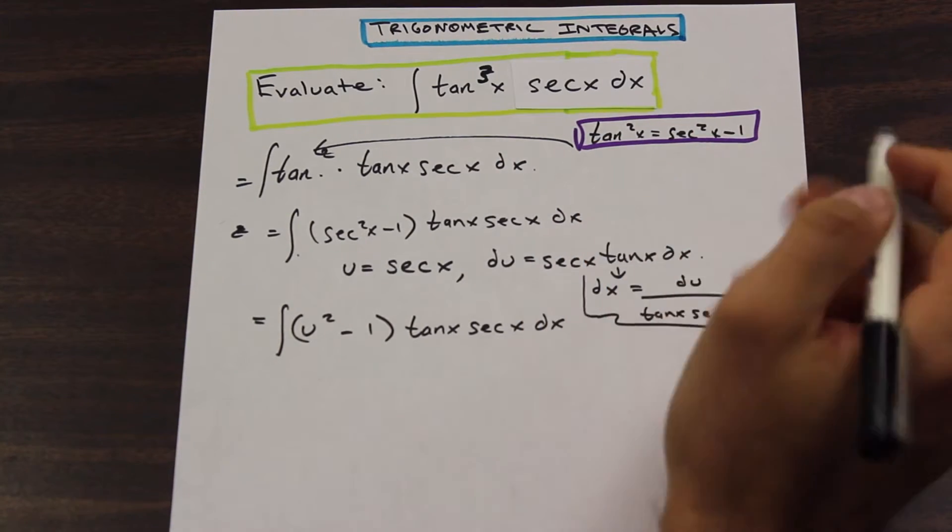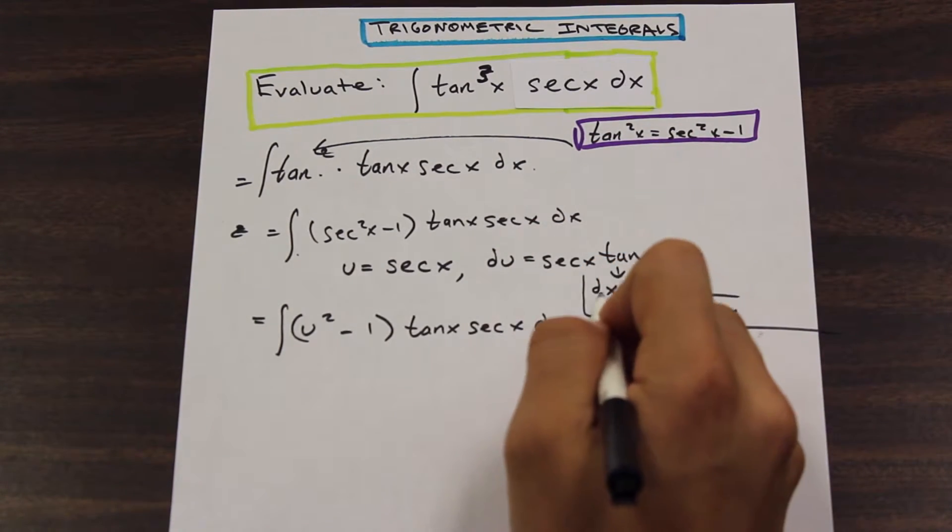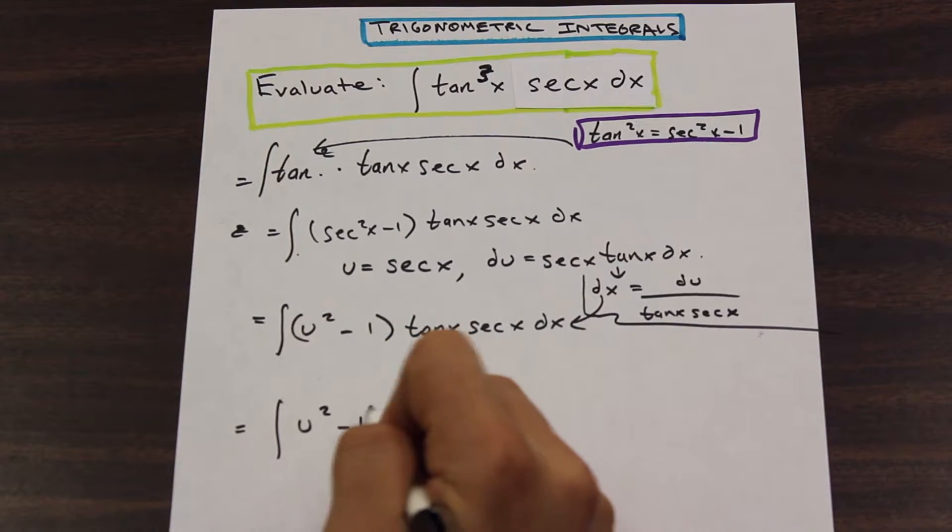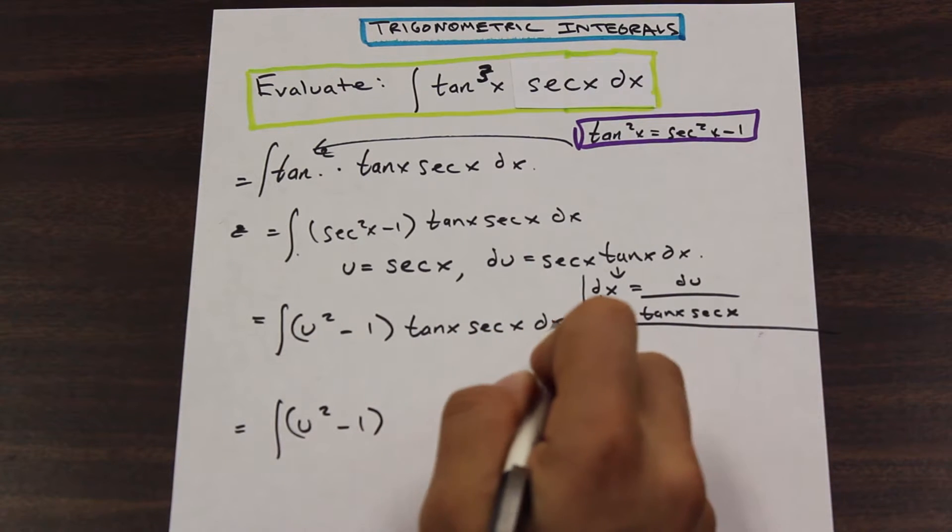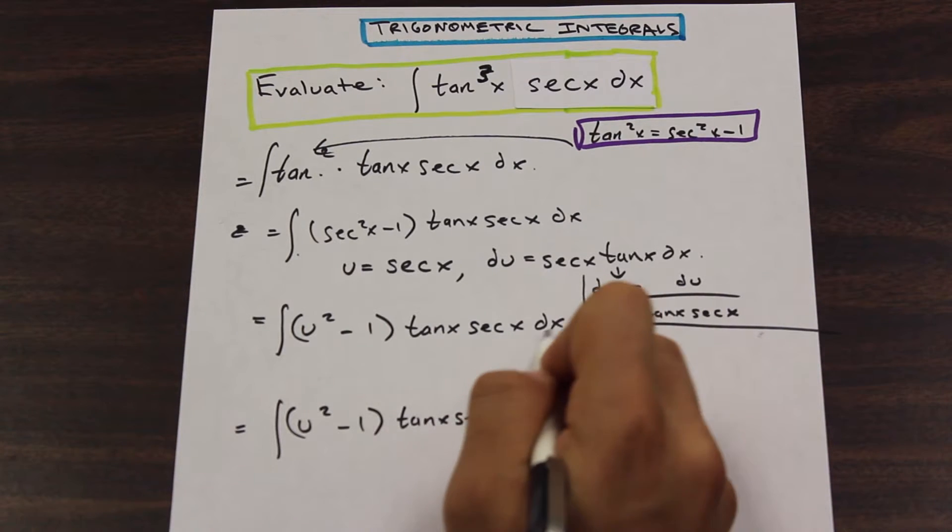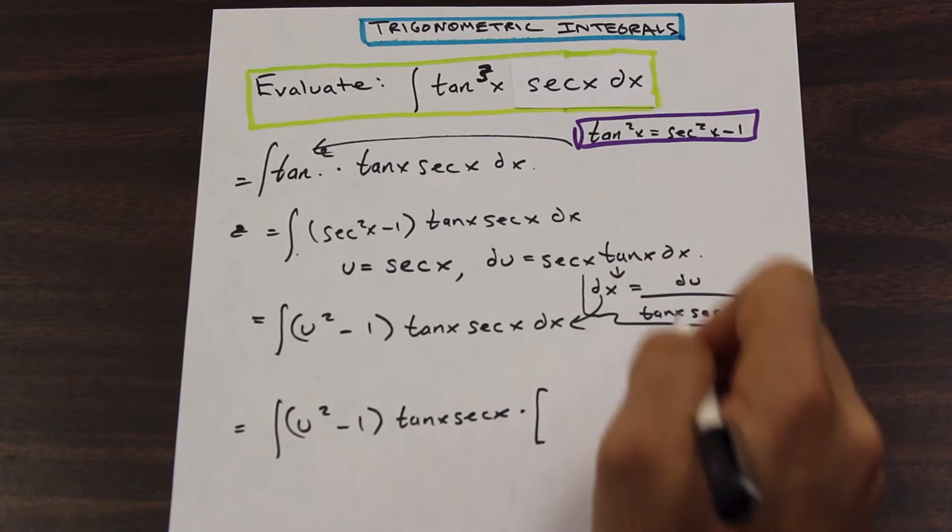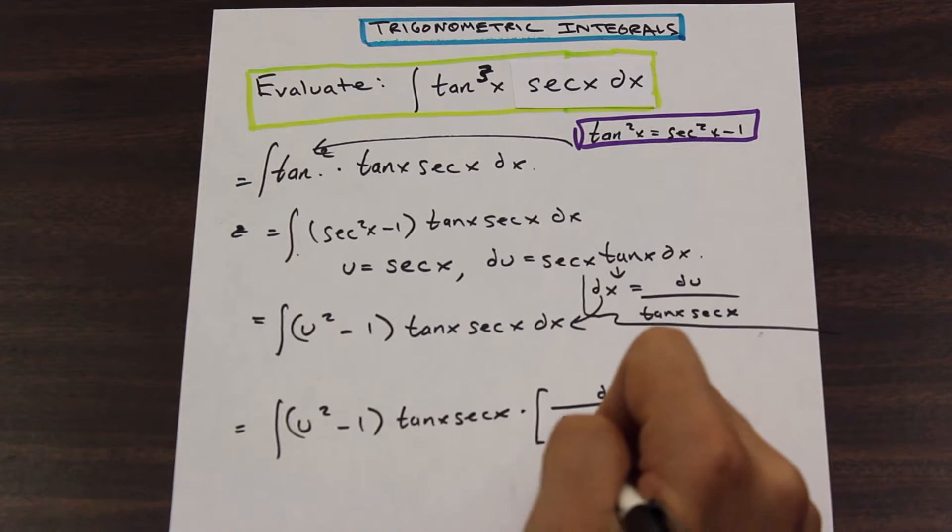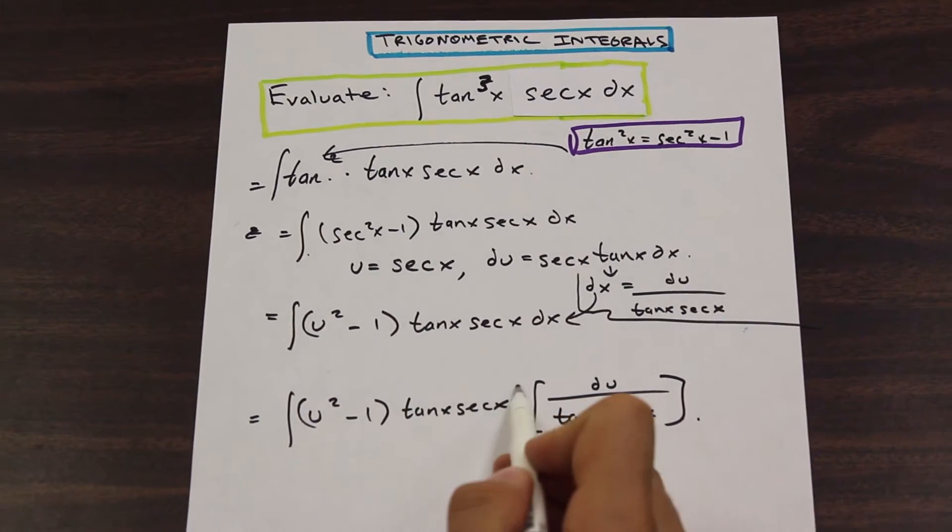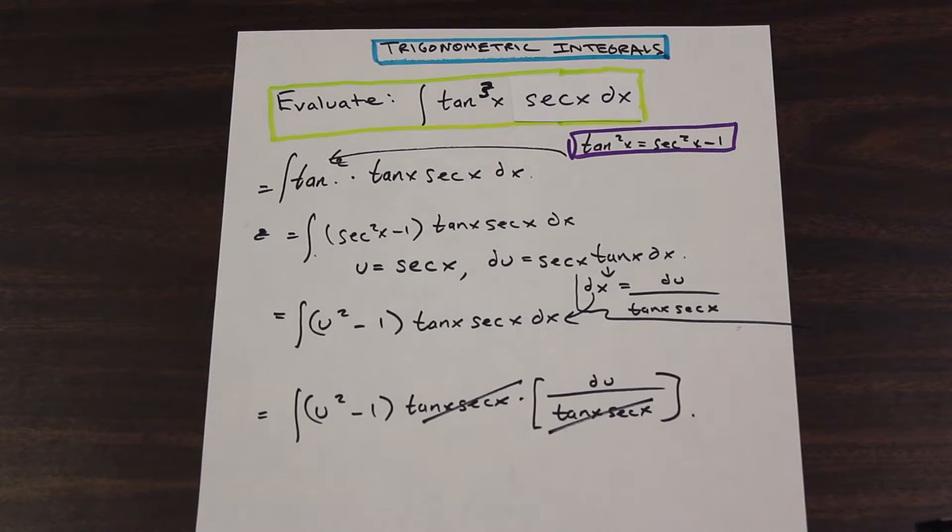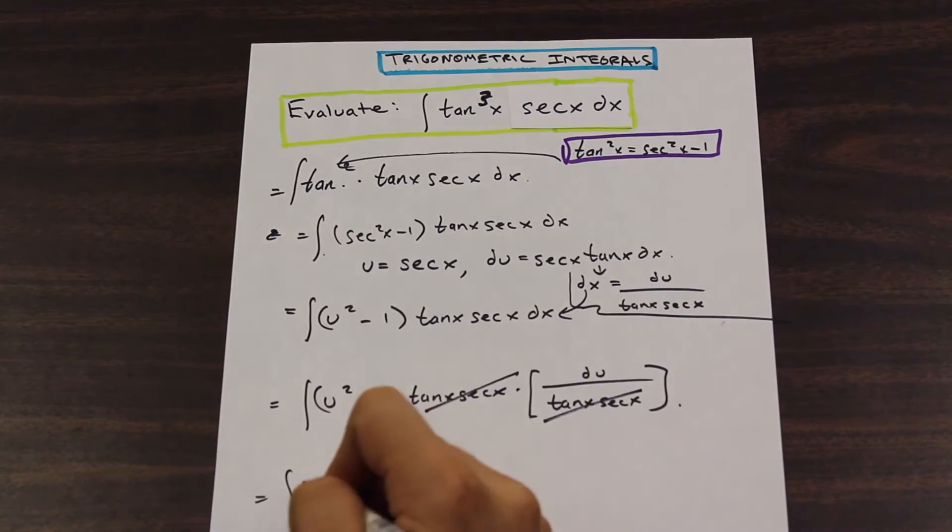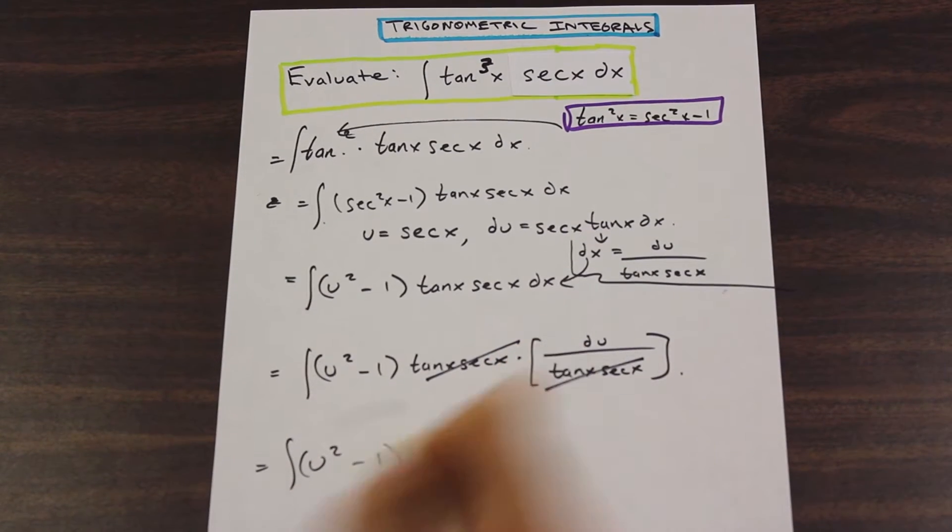And we can now substitute dx into this problem. So we have u squared minus 1, and that is going to be times tan x secant x still, right? But substituting for dx, if we substitute for dx here and put this in, we're going to be left with du over tan x secant x. And as you'll see, this tan x secant x cancels, and we're left with the very simple integral u squared minus 1 du.